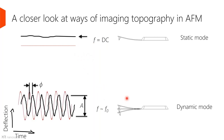In dynamic mode, the cantilever is continuously oscillating at around its resonance frequency. Our frequency of operation is around the resonance frequency of the cantilever, and we look at the oscillating deflection signal coming into the controller, trying to maintain the amplitude of oscillation relative to some reference.